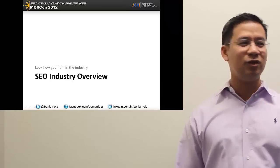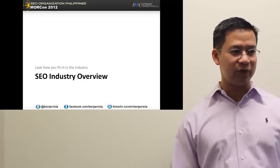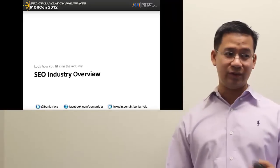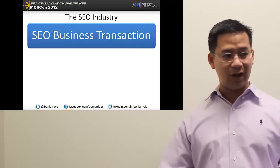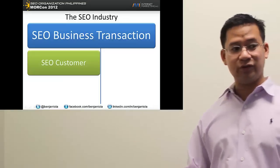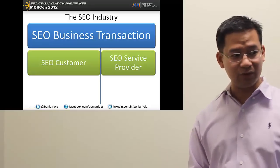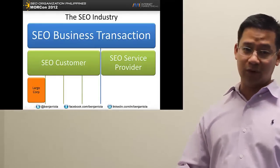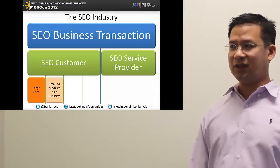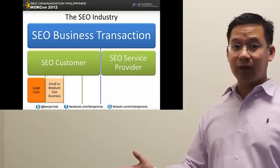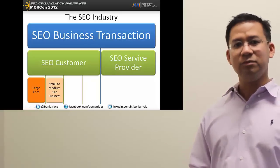Knowing all of that about the business — where we want to increase money — let's give an overview of the whole SEO business. In any SEO industry, you basically have an SEO business transaction, a contract, an agreement between you and your client. Your client is your SEO customer; you are the SEO service provider. In the SEO industry, there are different kinds of customers — super large corporations, Fortune 500 companies, popular brand names. Small to medium-size businesses are profitable and may make millions, but their brand is not worldwide.